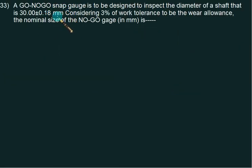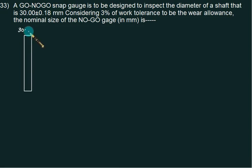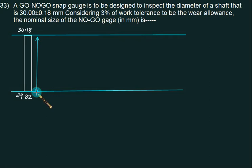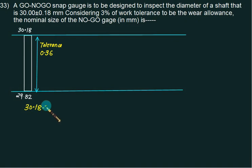We have GO and NO GO snap gauges to be designed to inspect the diameter of a shaft with 30 ± 0.18 mm, considering 3% wear tolerance as wear allowance. The maximum size is 30.18 and minimum size is 29.82. The work tolerance is obtained by subtracting: 30.18 minus 29.82 = 0.36 mm. Since this is a snap gauge used for shaft measurement, GO and NO GO are interchanged compared to plug gauges, and wear takes place only on the GO side.